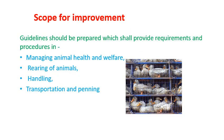The scope for improvement in animal welfare is extremely important for the Indian meat industry and for better acceptability of Indian meat in foreign markets. Guidelines should be prepared providing requirements and procedures for managing animal health and welfare, rearing of animals, handling of animals, and transportation and penning of animals.